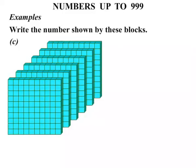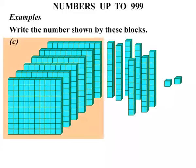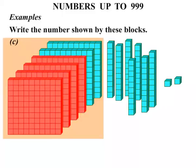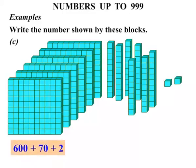Now let's consider part C. A number of flats there, a number of longs, and some shorts. Well let's count in hundreds: 100, 200, 300, 400, 500, 600. Plus, counting in tens: 10, 20, 30, 40, 50, 60, 70. Plus, and just counting in ones, well what have we got? 1, 2. So let's add these numbers. 600 plus 70, 670, plus another 2, equals 672.